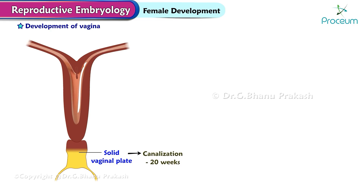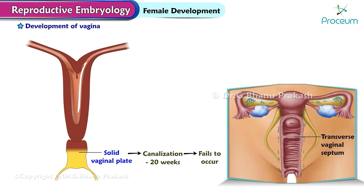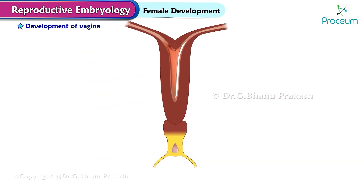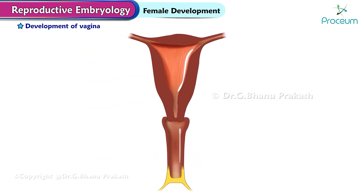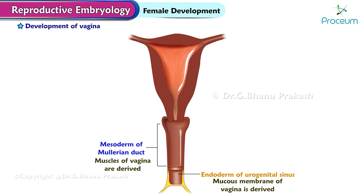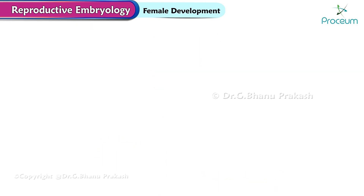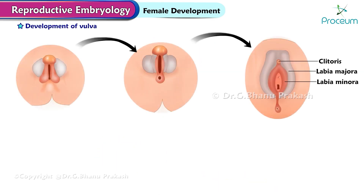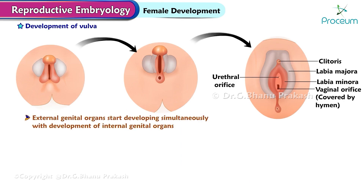If canalization fails to occur, it leads to a transverse vaginal septum. The mucous membrane of the vagina is derived from the endoderm of the urogenital sinus. The muscles of the vagina are derived from the mesoderm of the Müllerian duct.